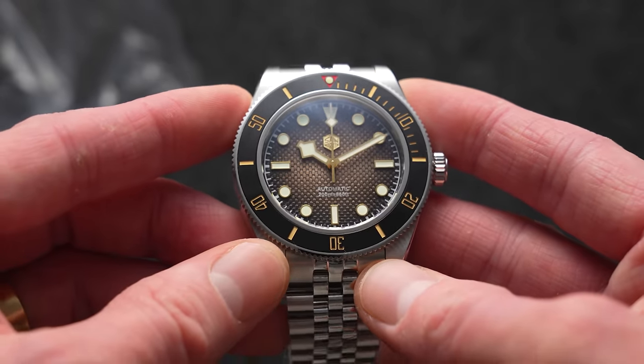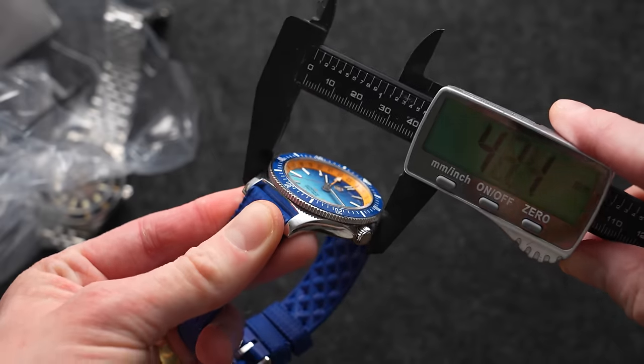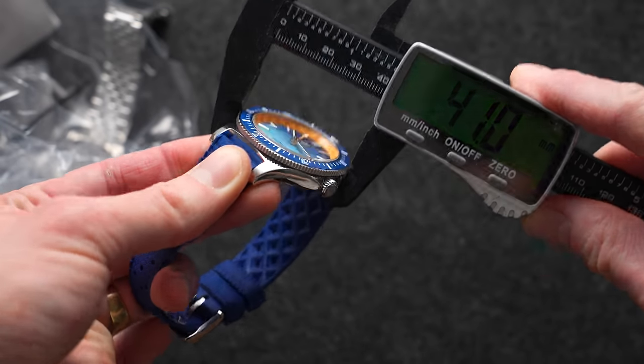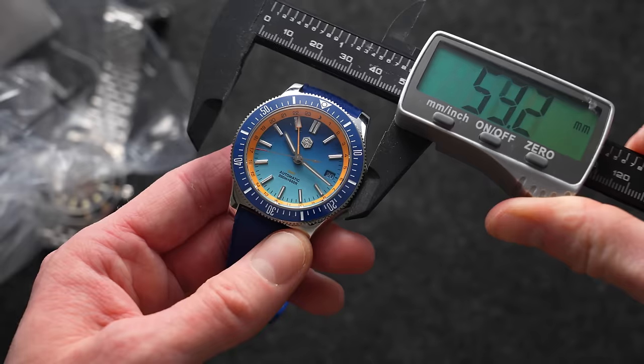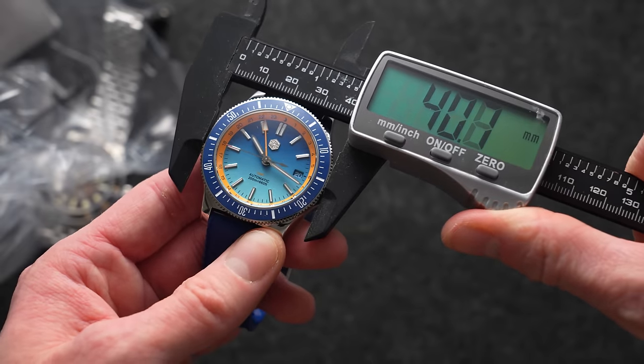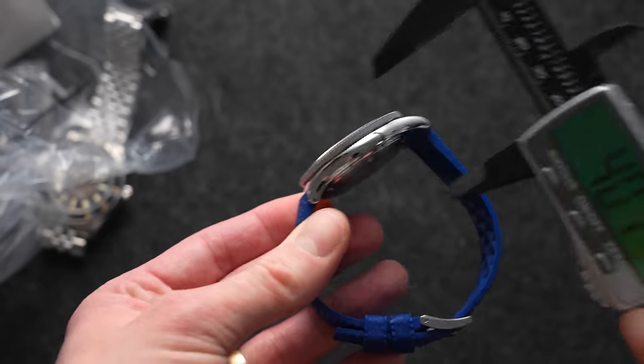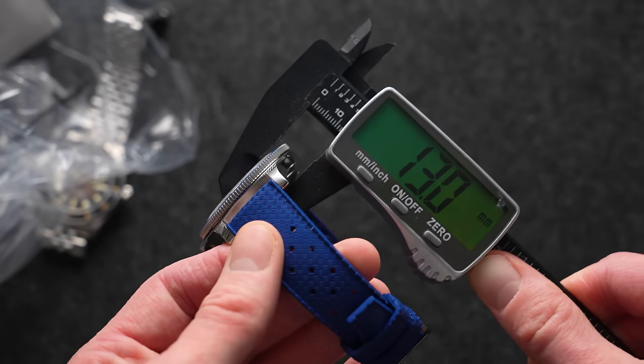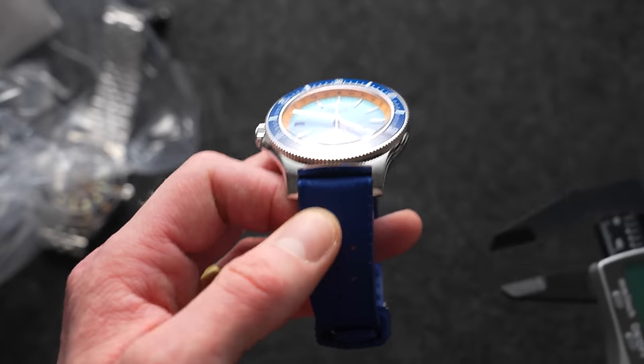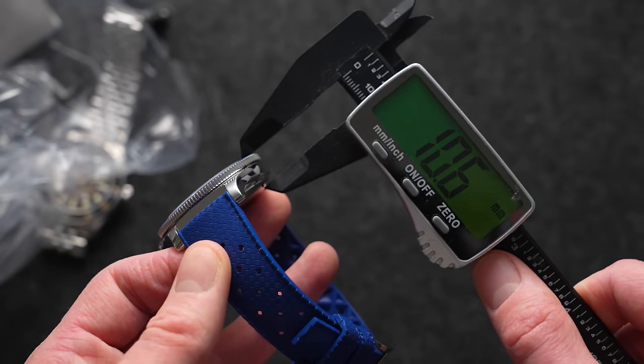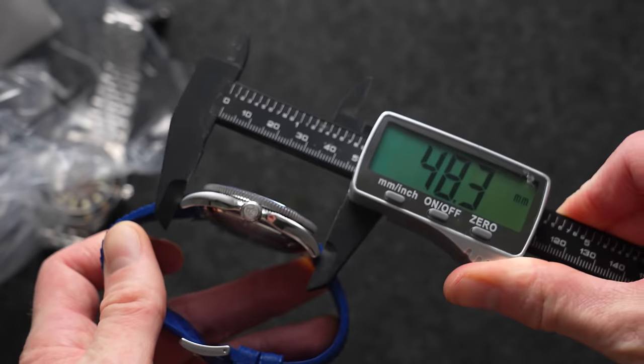Best measuring there, it's about 41 millimeters across not including the crown guards. Bezel width of about 40.7-ish. And this one's also pretty thin—13 millimeters. That includes the crystal though, which is domed a little as you can see. I think without it it's about 10.5. Lug to lug of 48.3.